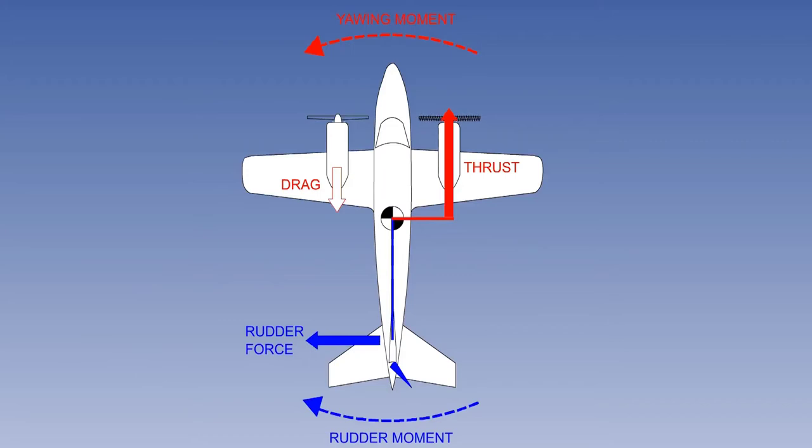Under a certain combination of conditions, control difficulties can arise under asymmetric thrust. Let us assume that the live engine is at a high thrust setting, the rudder is at its full deflection, and the CG is at its rearmost limit, that is, giving the shortest rudder arm. If the IAS, the dynamic pressure, is just sufficient to produce enough rudder moment to counter the yawing moment, there will be no yaw.